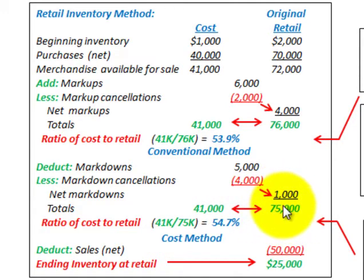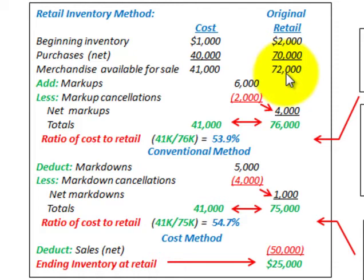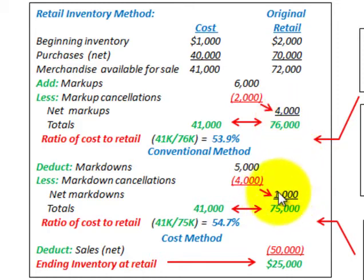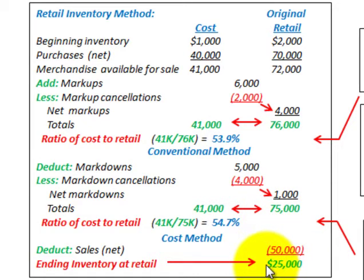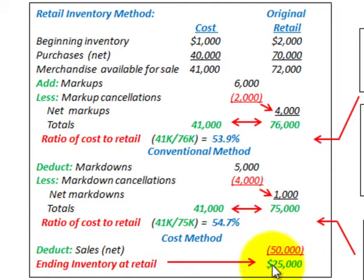Coming up with our next subtotal, we subtract the net markdowns of $1,000 from the $76,000 subtotal - which included merchandise available plus net markups - giving us $75,000. To determine ending inventory, we deduct our sales. With $50,000 in sales for the period, subtracting from $75,000 gives us ending inventory at retail of $25,000.